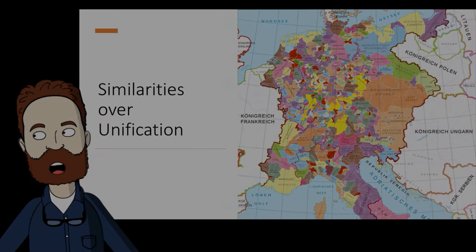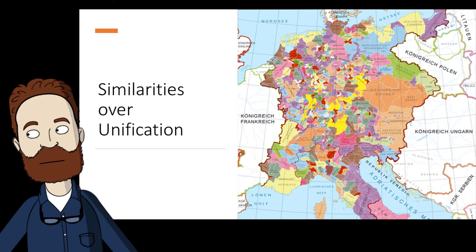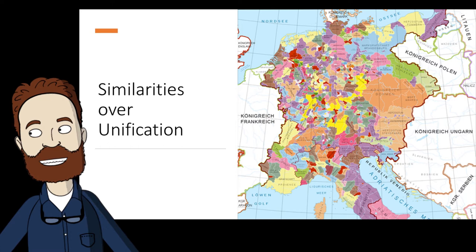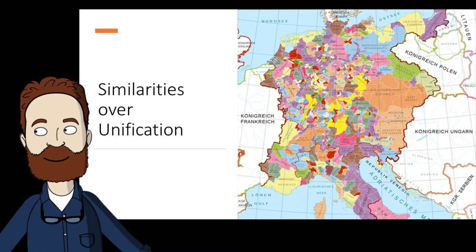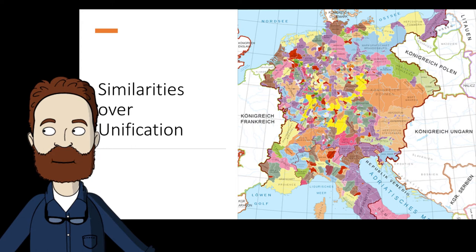Both unification movements in Germany and Italy have similar characteristics. Both countries were geographical expressions long before they were nations. Both countries shared a common obstacle, and that was Austria. Since the Congress of Vienna, Austria dominated Central European politics and included control of Northern Italy. By the mid-19th century, unifying Germany and Italy appeared to be almost hopeless, but both countries would achieve unification at the same time.